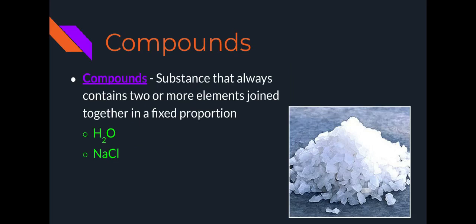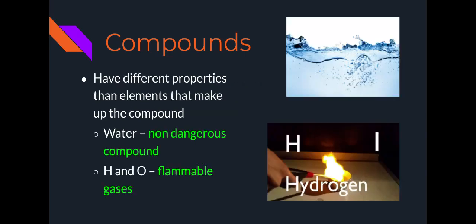Let's talk about compounds. Compounds are substances that always contain two or more elements joined in a fixed proportion. Two examples of compounds include water and sodium chloride. Sodium chloride is a fancy word for table salt, which is pictured in this slide. Compounds have different properties than elements that make up the compound. So I already used the example of copper and copper sulfate, but here's another example.